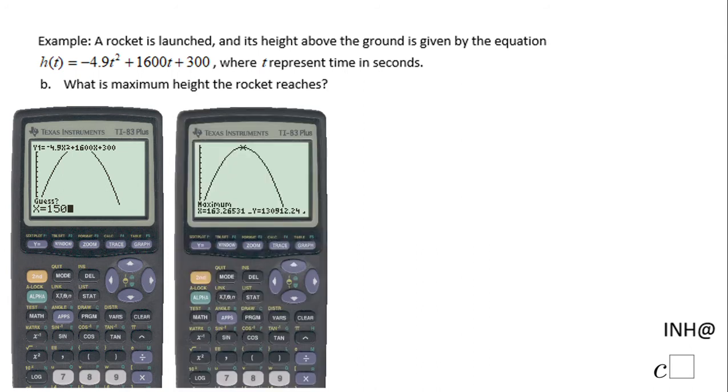And then you have the maximum. So the maximum for this rocket is at X equals 163.26 and Y is 130,912.24. So for our problem that means when t is 163.26 seconds, the height will be 130,912.24 and the maximum is this height.